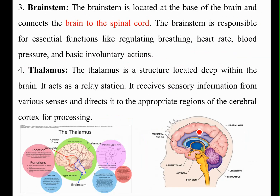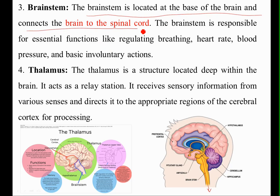The brain stem connects the brain to the spinal cord. It is located at the base of the brain. The brain stem is responsible for essential functions like regulating breathing, heart rate, blood pressure, and basic involuntary actions. Unknowingly, we perform some actions that are usually controlled by the brain stem.